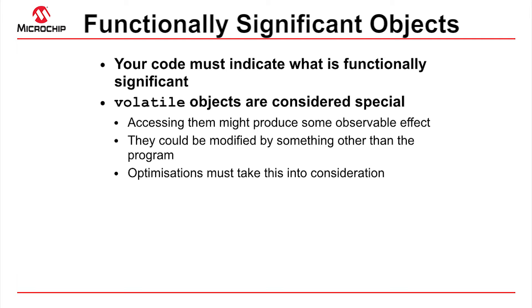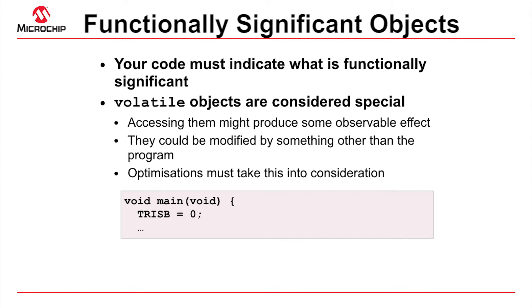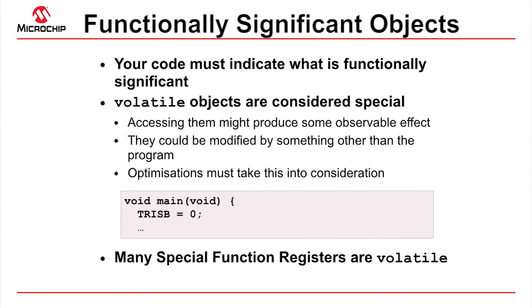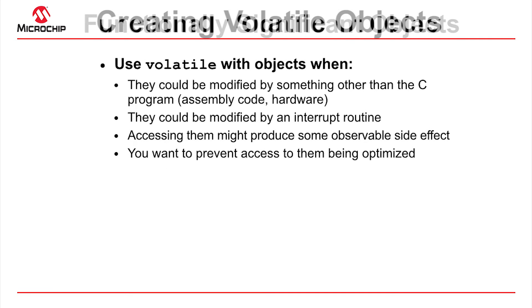In the preceding examples, assignments to special function registers like TRISB were never removed, unless the assignment could never possibly execute. This is because the register symbols are defined using volatile in their header files. The observable aspects of writing to device registers should be quite obvious. You should use the volatile specifier to ensure your program behaves the way you intend. You can also use it to temporarily assist with debugging.